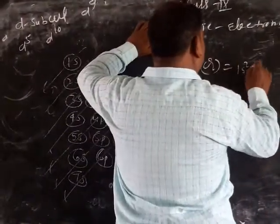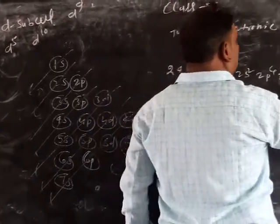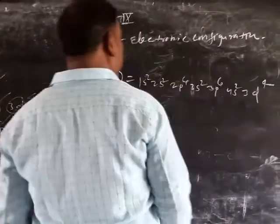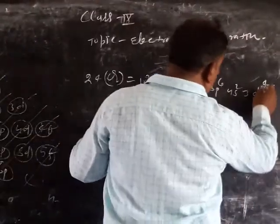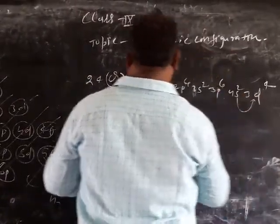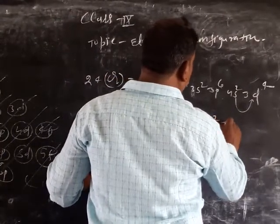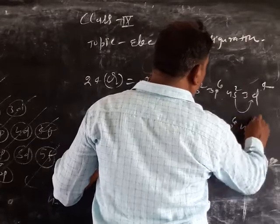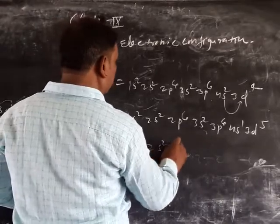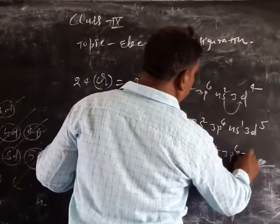The electronic configuration of the one S2, 2S2, 2P6, 3S2, 3P6, 4S2, 3D in 4. The exception is that 4M is the same as the 2H2, 2H2, 2P6, 3H2, 3P6, 4S1, and 3P5. The exception is 1H2, 2H2, 2P6, 3P6, 3P6, 3P6.